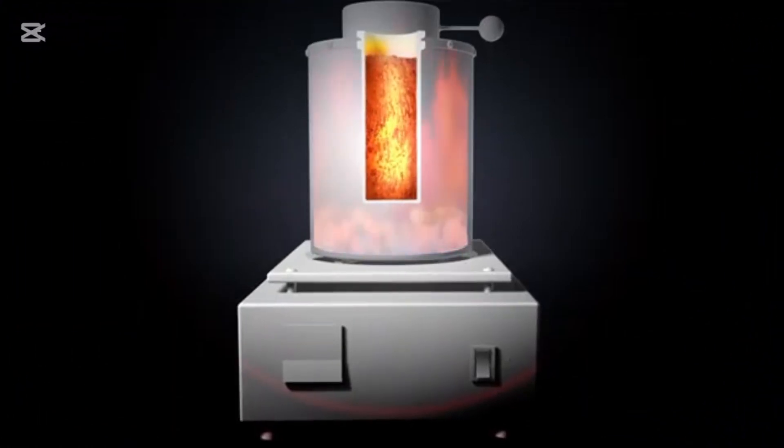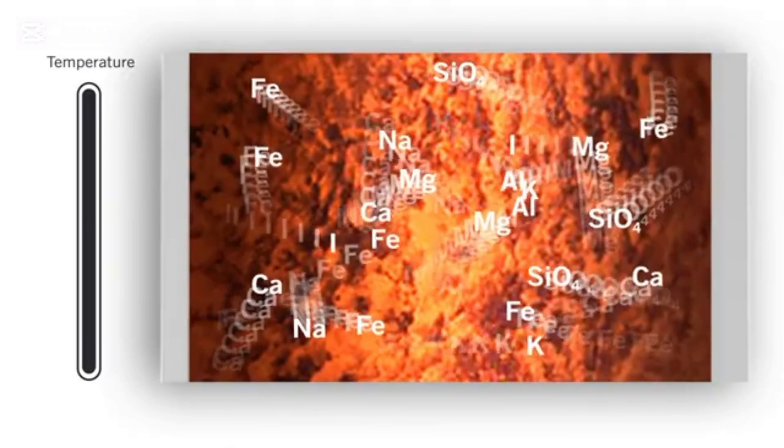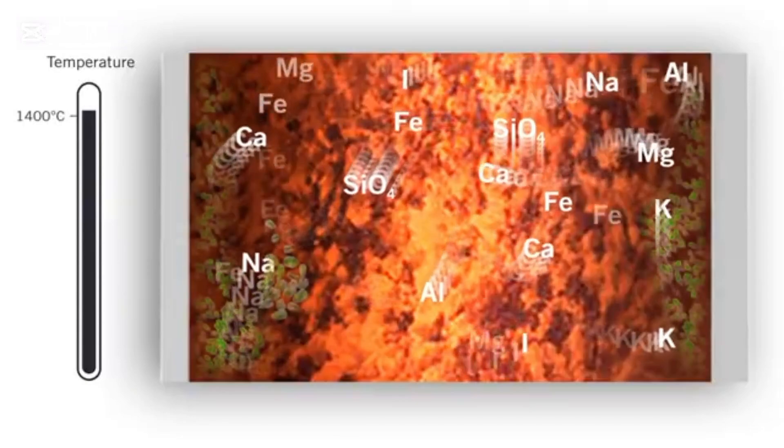In order to picture what happens when crystals form from a melt, let's zoom in on a pool of magma similar to what Bowen observed in his experiment. Notice that there are a variety of elements and ions within the melt. As temperatures cool and crystals form from the melt, they remove certain elements.